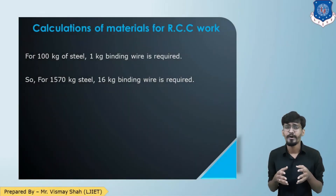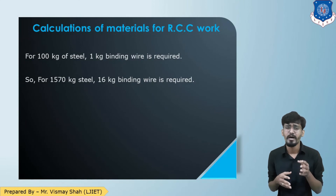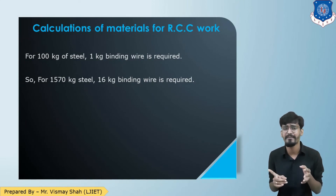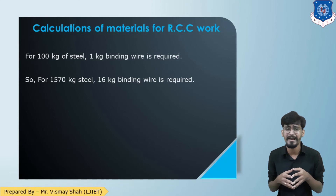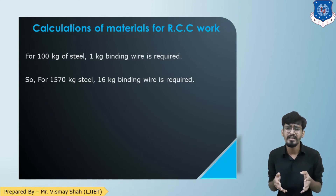For binding wire, the thumb rule is that for every 100 kg of steel, 1 kg of binding wire is required. Here with 1,570 kg of steel, we need 15.7 kg, approximately 16 kg of binding wire. So now we have sorted all the materials.